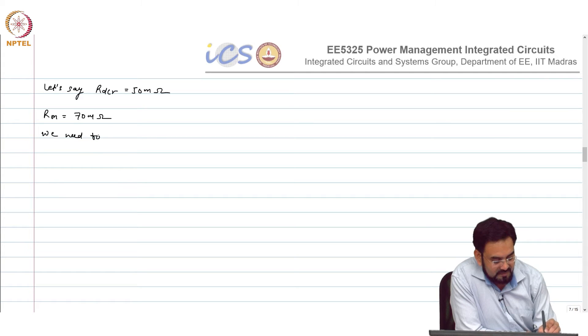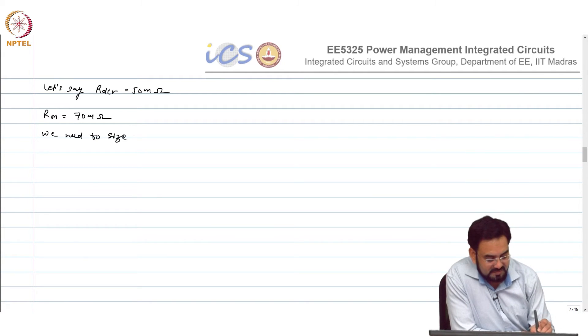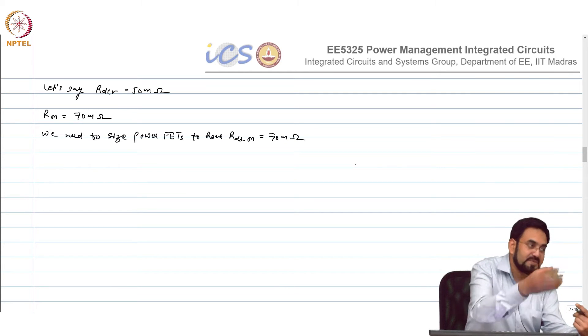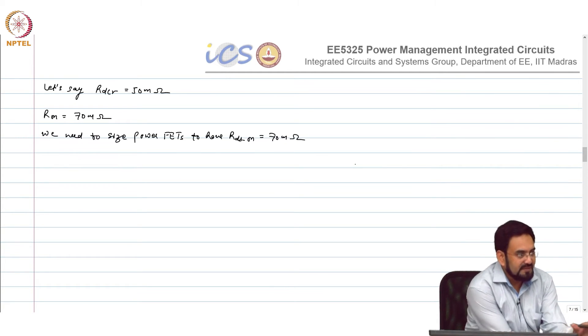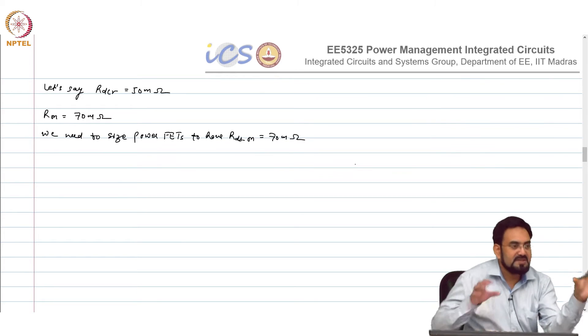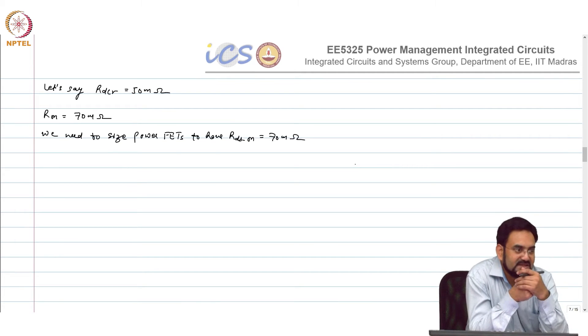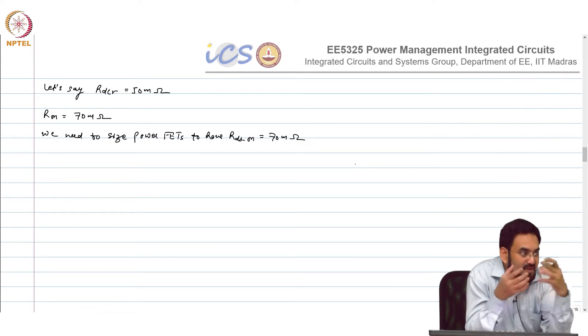We need to size power FETs to have R_DS_on equal to 70 milliohms. And this is considering that both R_DS_on of P and N are the same, but you can choose different as long as your efficiency numbers are met. So let's say I am keeping the size of PMOS and NMOS same and I know the mobility of PMOS is less, it may be 3 to 4 times less. So your R_DS_on of PMOS will be 3 to 4 times in that case.